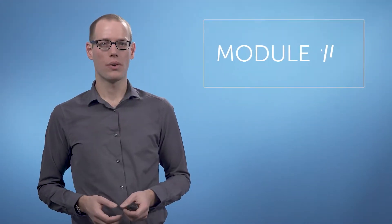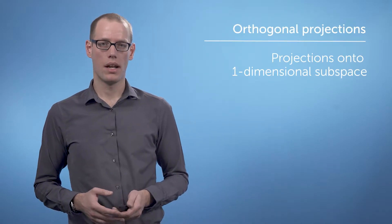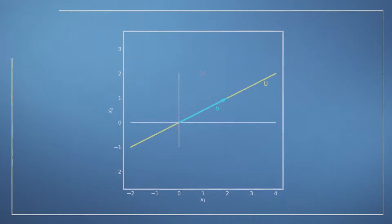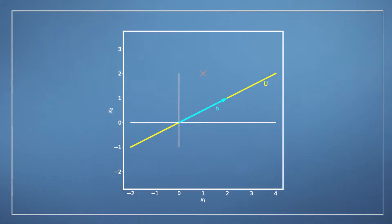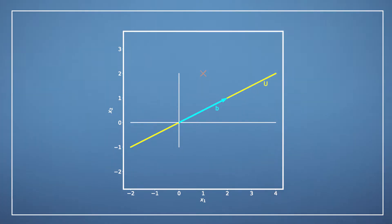In this video, we'll look at orthogonal projections of vectors onto one-dimensional subspaces. Let's look at an illustration. We're given vector x in two dimensions, and x can be represented as a linear combination of the basis vectors of R2. We also have a one-dimensional subspace u with a basis vector b. That means all vectors in u can be represented as lambda times b for some lambda.